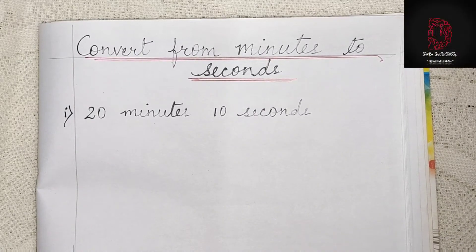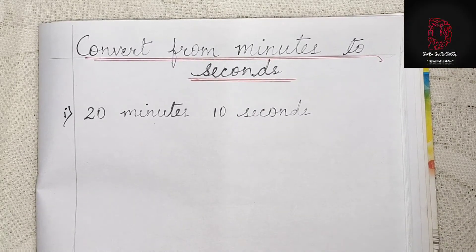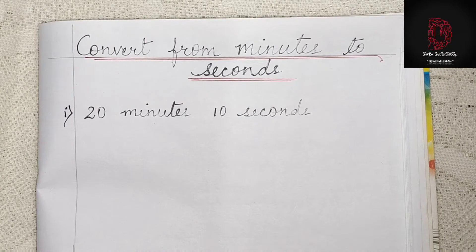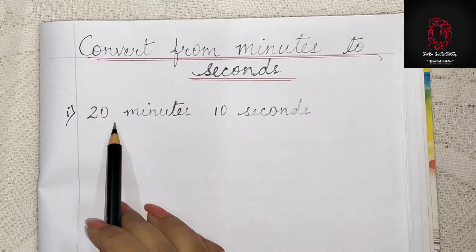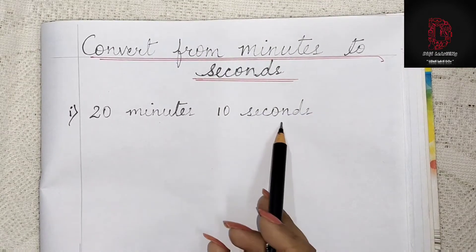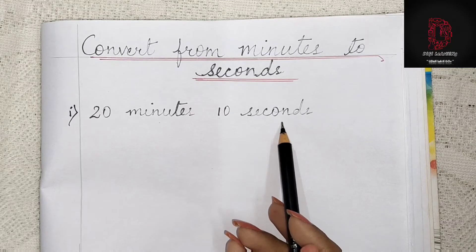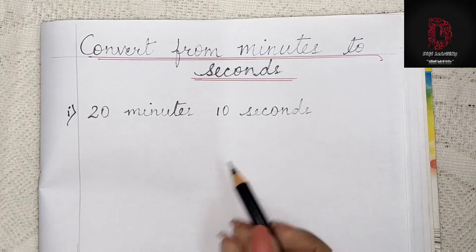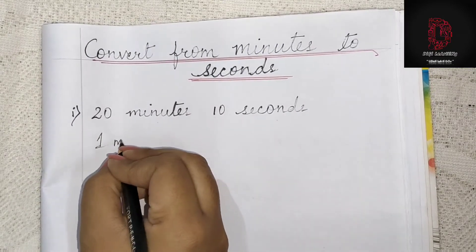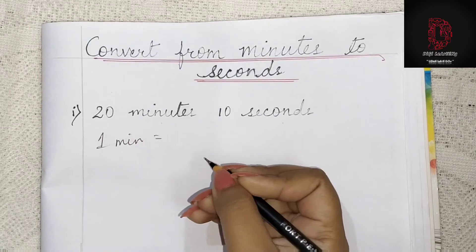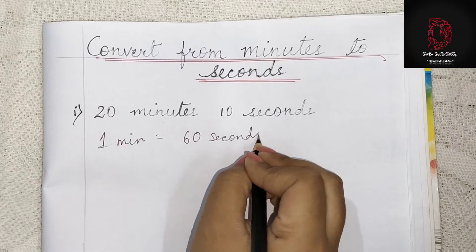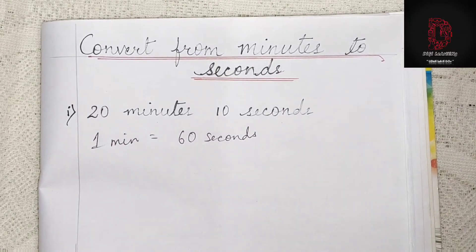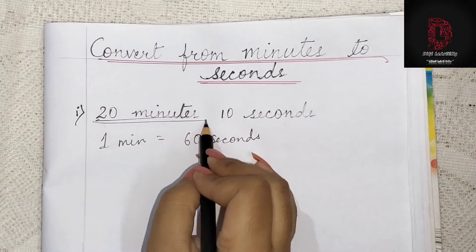Hello everyone, welcome to my channel DG Learning. Today we are going to learn about the conversion from minutes to seconds. So first, one minute is equal to 60 seconds.